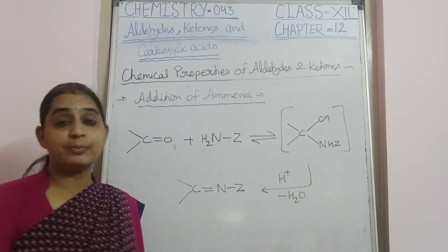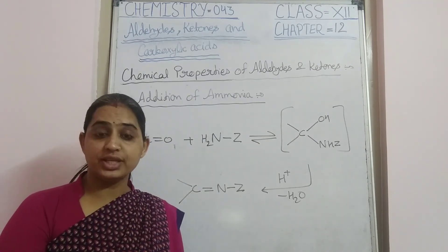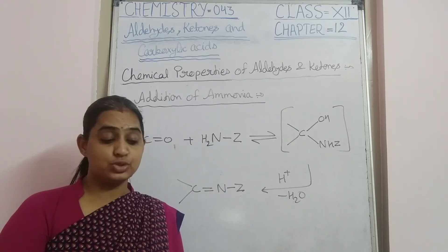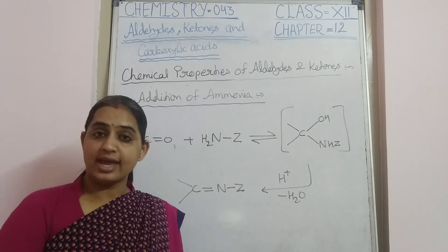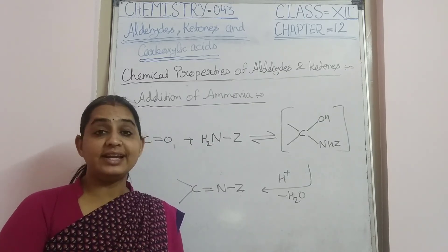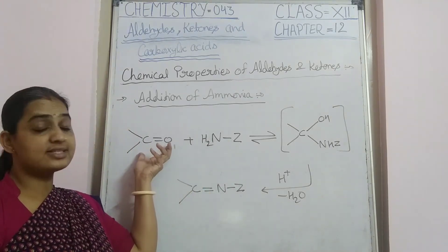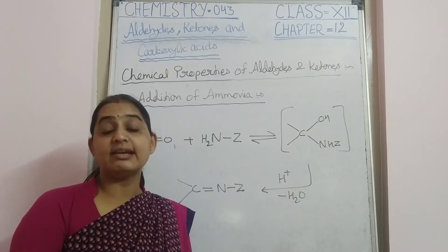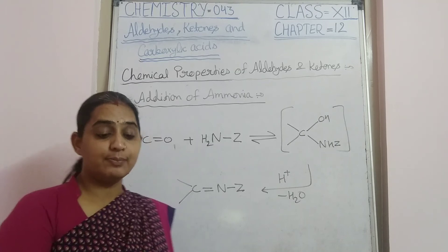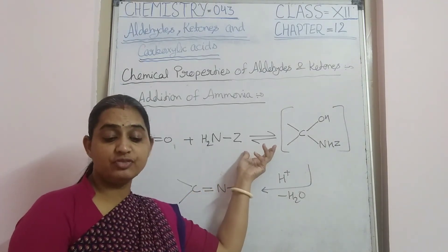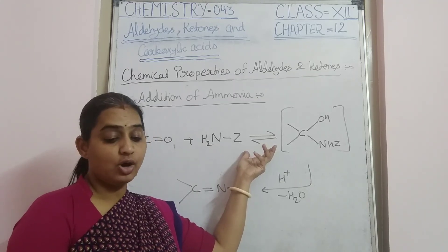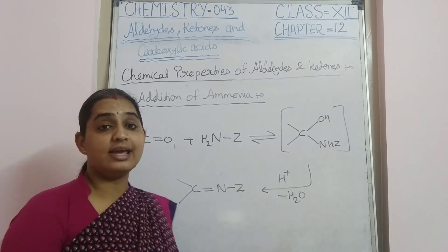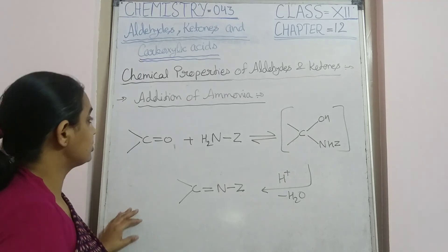The next reaction is the addition of ammonia and its derivatives. Nucleophiles such as NH₂Z — where Z can be an alkyl group, OH, NH₂, C₆H₅NH, or NHCONH₂ — add to the carbonyl group of aldehydes and ketones. This reaction is reversible and catalyzed by acid. The equilibrium favors product formation due to rapid dehydration of the intermediate, converting it to a C=N-Z product.